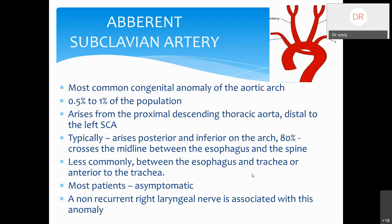The most common congenital anomaly of the aortic arch is an aberrant subclavian artery, noted in 0.5 to 1% of the population. Here the subclavian artery arises from the proximal descending thoracic aorta distal to the left subclavian artery, typically posterior and inferior on the arch. In 80% of cases it crosses the midline between the esophagus and the spine; less commonly between the esophagus and trachea, or anterior to the trachea. Most patients are asymptomatic. Aberrant subclavian artery is associated with a non-recurrent right laryngeal nerve, as the right laryngeal nerve normally loops around the subclavian artery — part of embryological development.